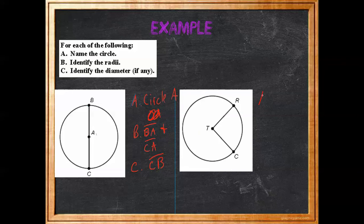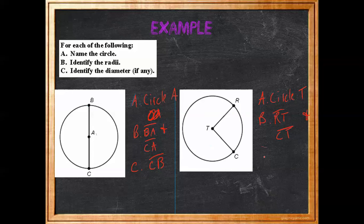Over here, name this circle — this would be Circle T. The radii would be RT and CT, and we don't have any diameters in this one because there is no line that goes all the way across the circle.